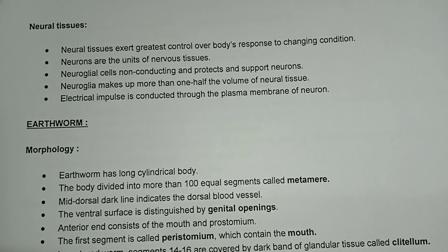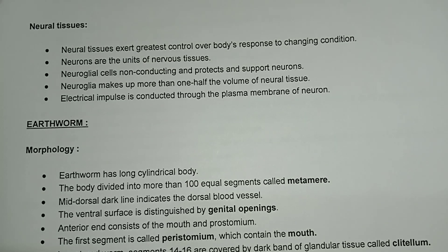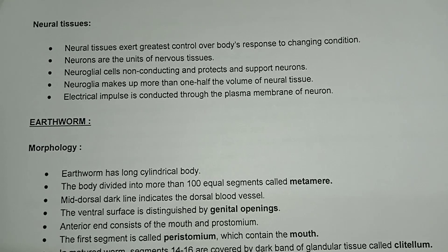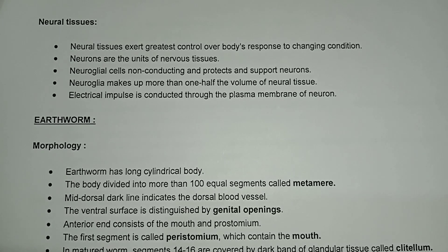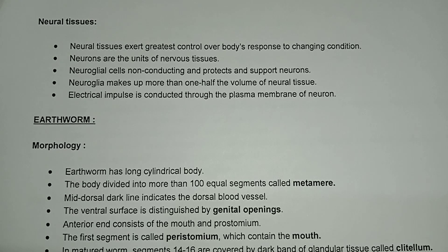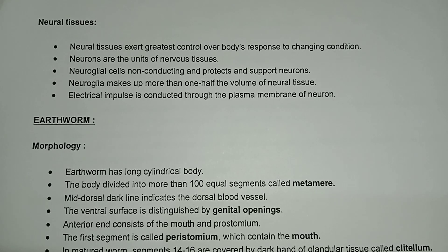Neural tissue exerts the greatest control over the body's response to changing conditions. Neurons are the units of nervous tissue. Neuroglial cells are non-conducting and protect and support neurons. Neuroglia makes up more than one half the volume of neural tissue. Electrical impulses are conducted through the plasma membrane of neurons.